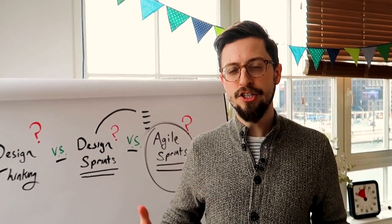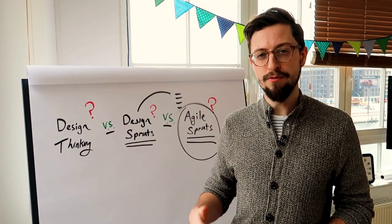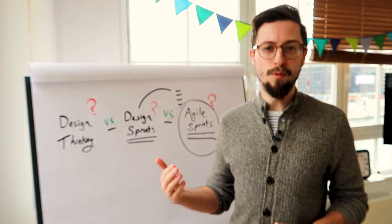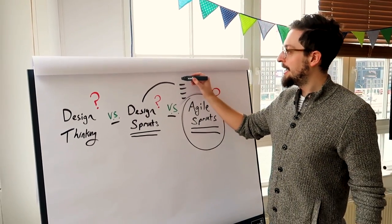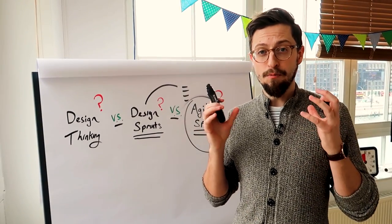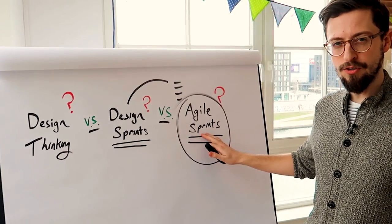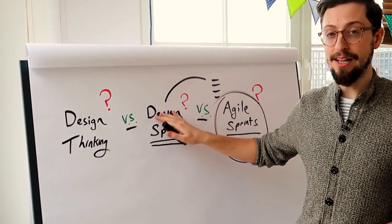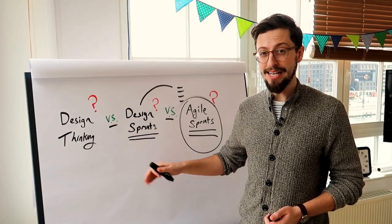An agile process within a company means that the developers themselves work in sprints. Many companies have their own way of doing that — it's often two weeks — and essentially that means they're going to work on a specific part of the app for two weeks and actually get that finished. So agile sprints are for executing the work after something is validated, and the design sprint is for validating ideas.